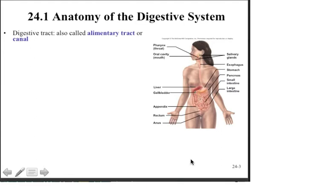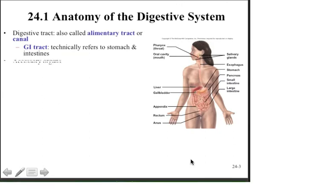The digestive tract is called the alimentary canal, and it's a continuous route from the mouth to the anus. It technically refers to the stomach and the intestines when we talk about the GI tract. There are accessory organs we need to be aware of, and these include the gallbladder, the liver, the pancreas, the salivary glands, the teeth, and the tongue.